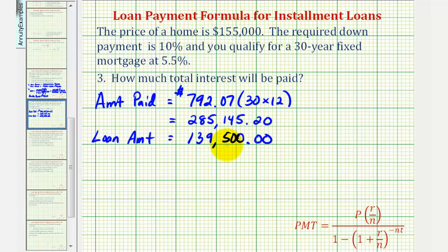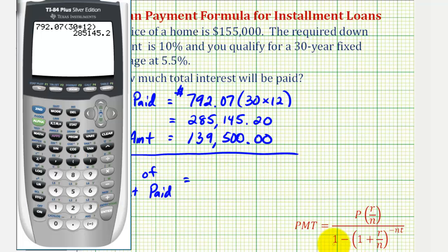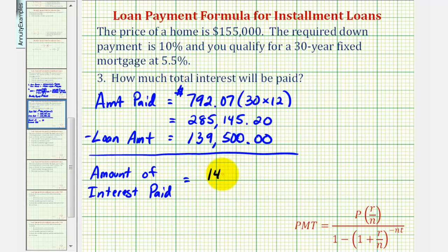The difference of these two amounts is the interest paid. Subtracting the loan amount of $139,500 from $285,145.20 gives us $145,645.20 in interest paid over 30 years. Notice the amount of interest paid is actually more than the original loan amount. I hope you found this example helpful. In the next example, we'll take a look at a loan that also has points.